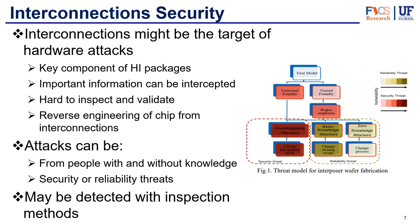One of the other things we wanted to look at is security in terms of the interconnections. Like we've mentioned, interconnections are one of the key components of HI packages, so they might be the target for hardware attacks. If you're a malicious fab or rogue employee trying to attack through the hardware package, it's likely that the interconnections are the target. Because they're so important, they carry so much important information that if intercepted could be very dangerous and a very high security threat. They're also very hard to inspect and validate, so it's hard to tell if they've been tampered with. And if someone gets the interconnection layout, they might be able to reverse engineer the actual layout for the chips and the whole package, potentially stealing intellectual property.